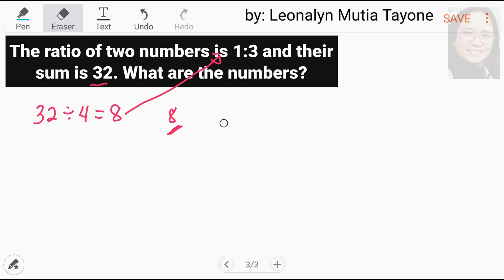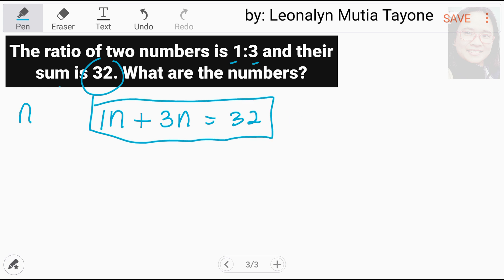Kung gusto nyo ng napakadetalyadong solusyon nito, ito ang gagawin natin. Let n be that number na i-multiply natin dito sa ratio natin para i-add natin yan para ang sum niya ay 32. So, 1n plus 3n equals 32. Ito yung equation dito sa problem na ito. And then, like terms naman ito. So, 1n plus 3n that is 4n equals 32.